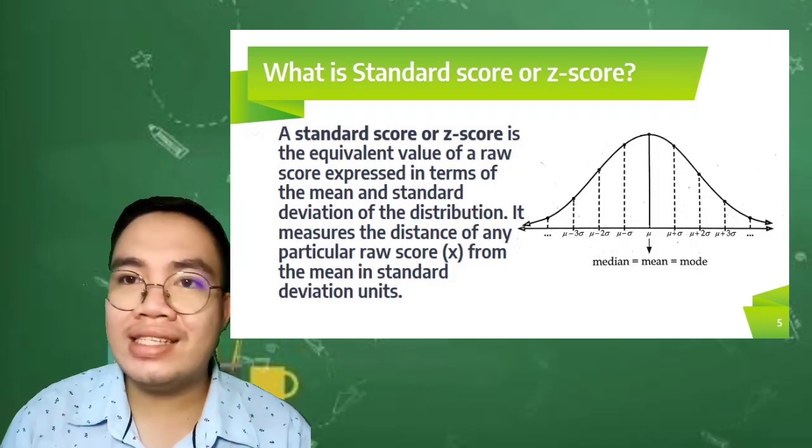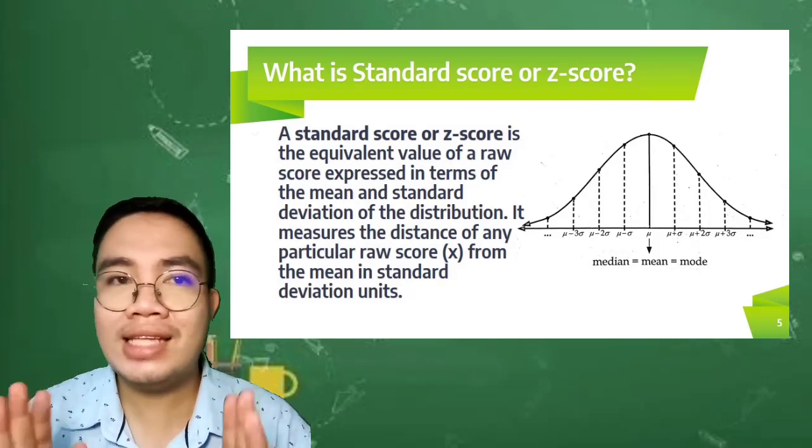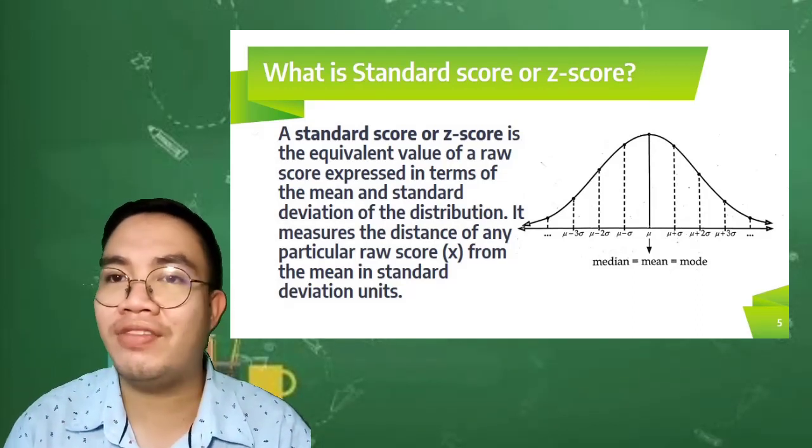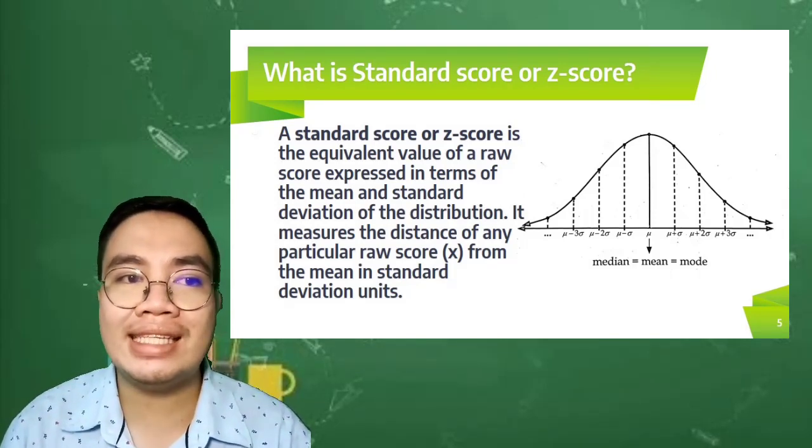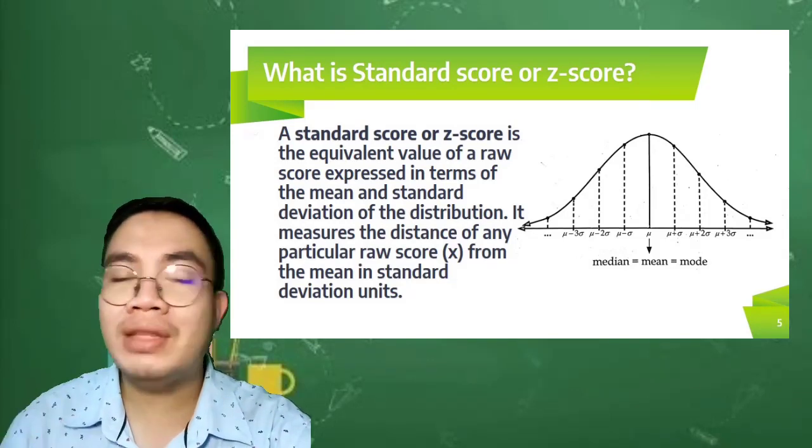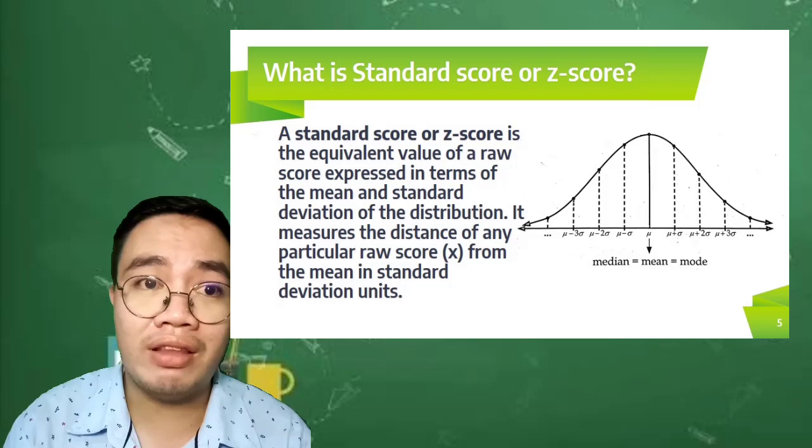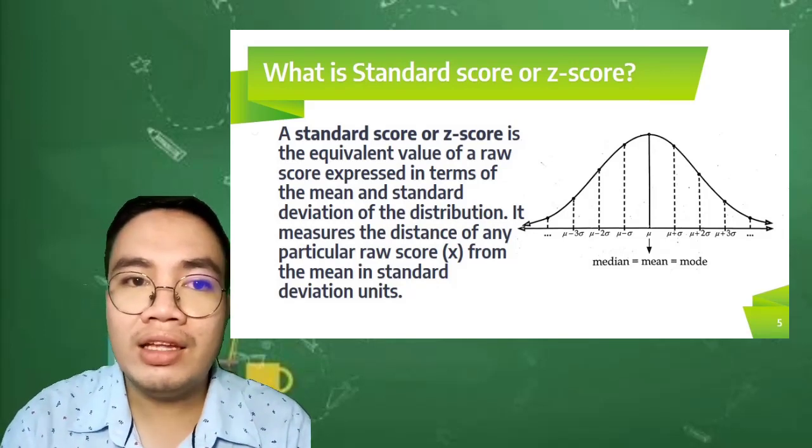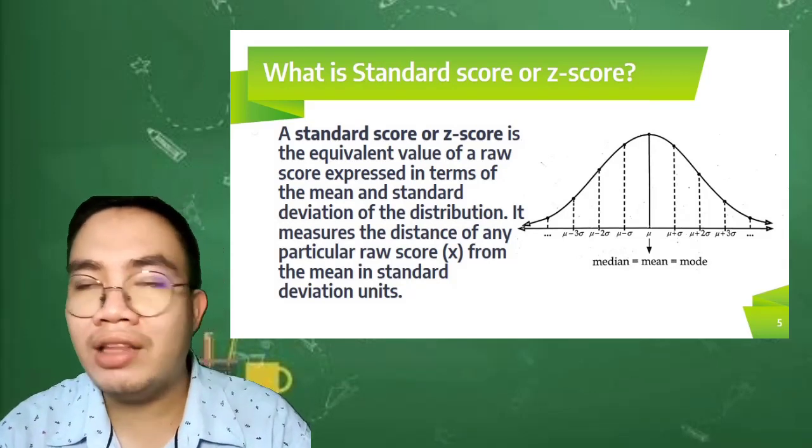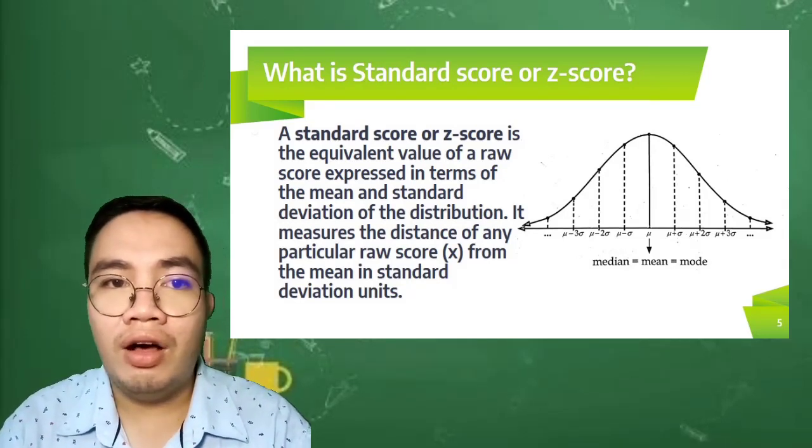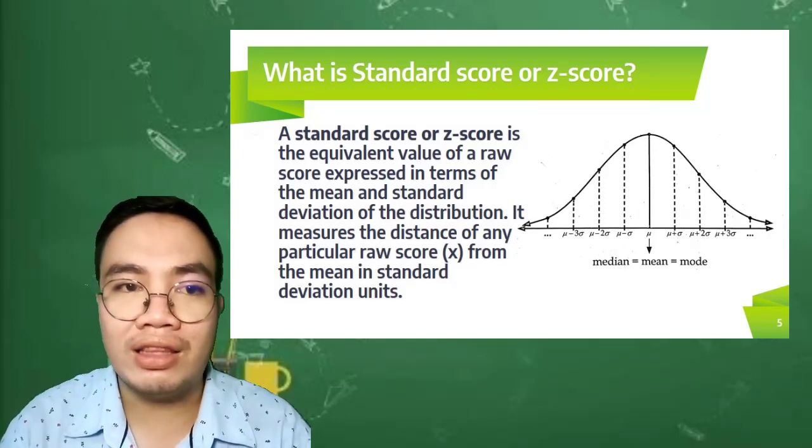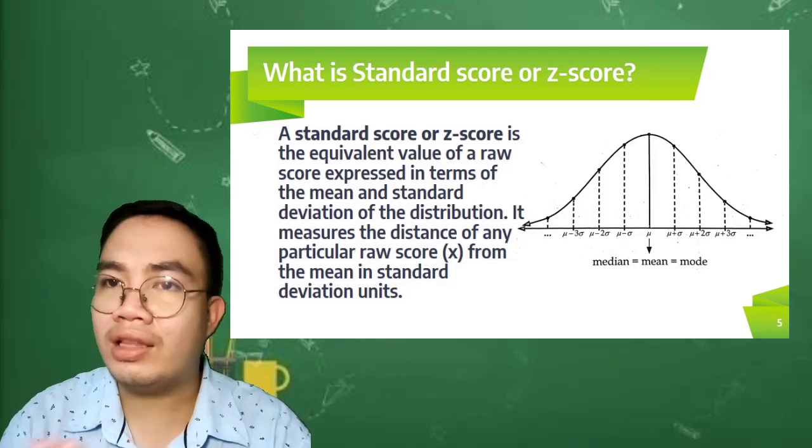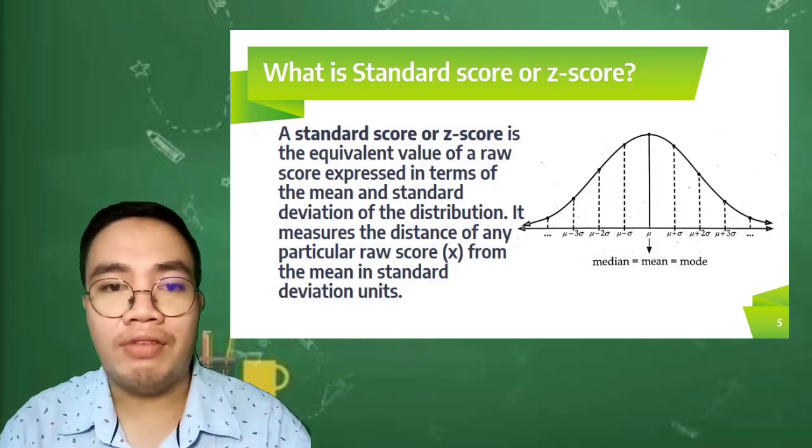What is the standard score or commonly called the Z-score? The standard score or Z-score is the equivalent value of a raw score expressed in terms of the mean and the standard deviation of our distribution. It measures the distance of any particular score from the mean in standard deviation units. From the mean which is found at the center, we are adding the mean plus the standard deviation going to the right (1, 2, and 3), and going to the left, we are subtracting, which means the values are negative of the standard deviation.